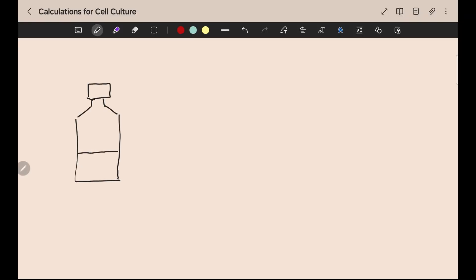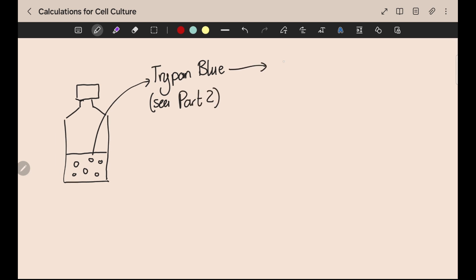You have a flask of cells that have been growing and you measure the viability with a simple assay like the Trypan Blue test, which I talked about in the previous video, and find that you have 9 times 10 to the 5 viable cells per mil, which means that you need to subculture them. We know we need to subculture our flask of cells and we know that we need to have 2 to 4 times 10 to the 5 cells per mil.